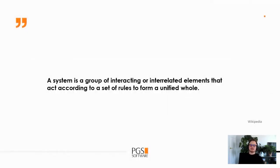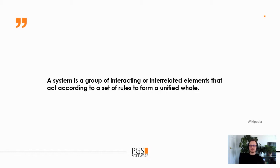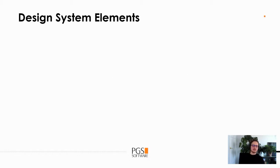As Wikipedia says, a system is a group of interacting or interrelated elements that act according to a set of rules to form a unified whole. There are two main parts to this definition. The first is the elements of the design system, and the second is a unified whole. In our case, in our design system, we understand unified whole as a visually consistent and consistent-in-terms-of-experience user interface.